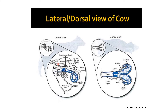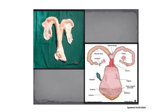In the dorsal part is the rectum, and we also have the urinary bladder. This diagram shows the schematic diagram of the reproductive tract of a cow alongside the actual specimen. For the parts of the reproductive tract, we have the ovary, the oviduct, the uterine horn, the uterine body, the cervix, the vagina, and the vestibule. We also have associated structures such as the urethra, clitoris, and bladder.